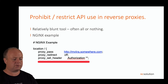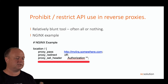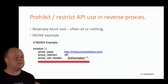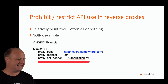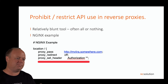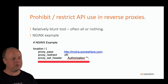So anything sent in with an authorization header just gets replaced with nothing, which essentially means basic auth won't work for any user. But that's a relatively blunt tool — it's a bit all or nothing. No one can, or everyone can.